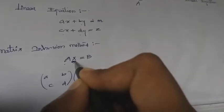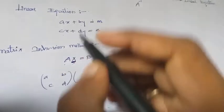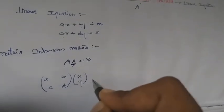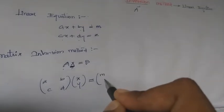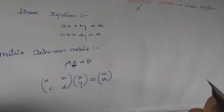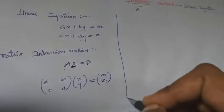What is given? The variables x, y, small x, small y, equal to B. B means the right-hand side constants m and z. Okay, so we need to solve using the matrix inversion method.